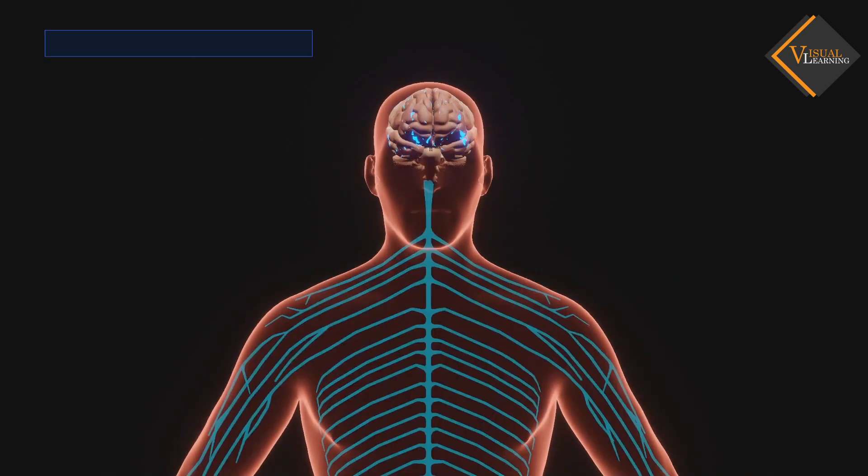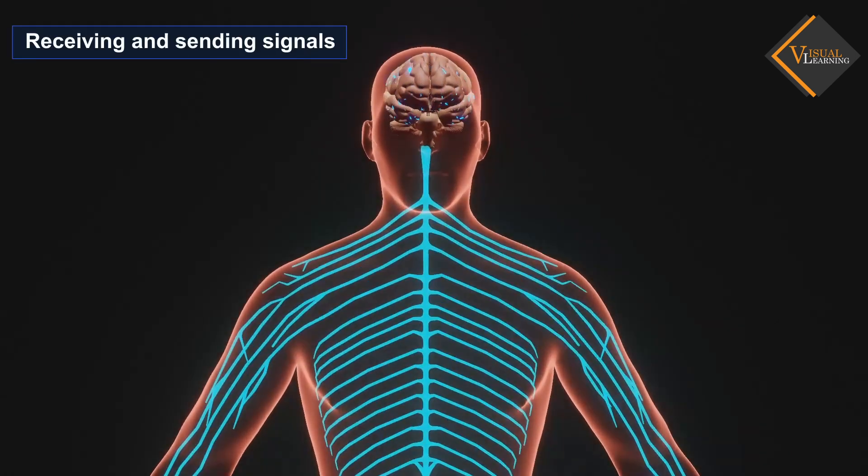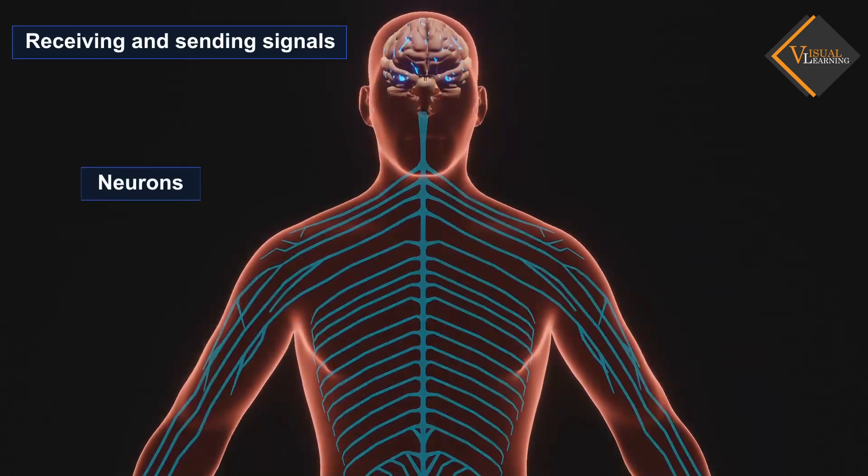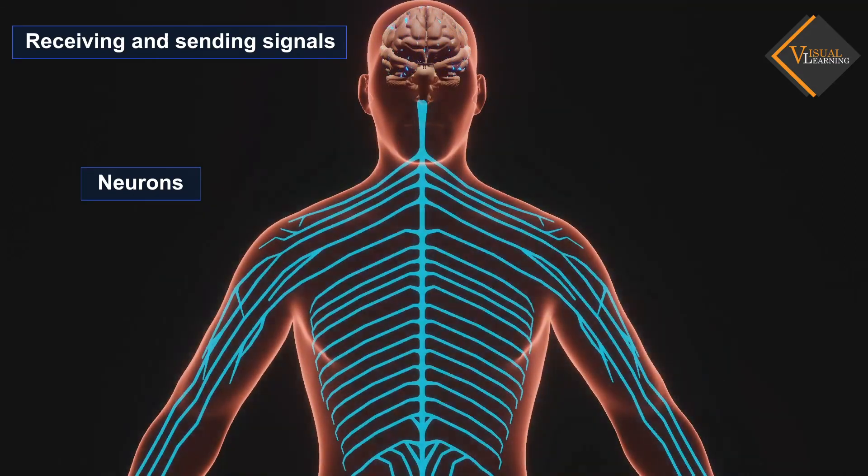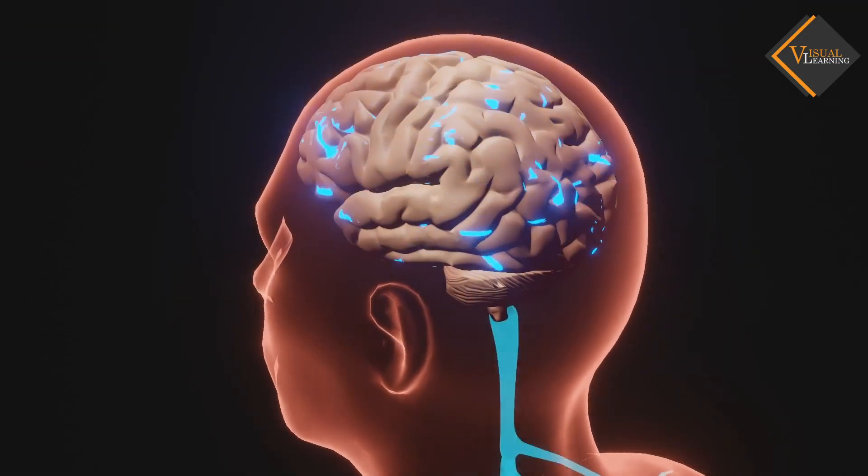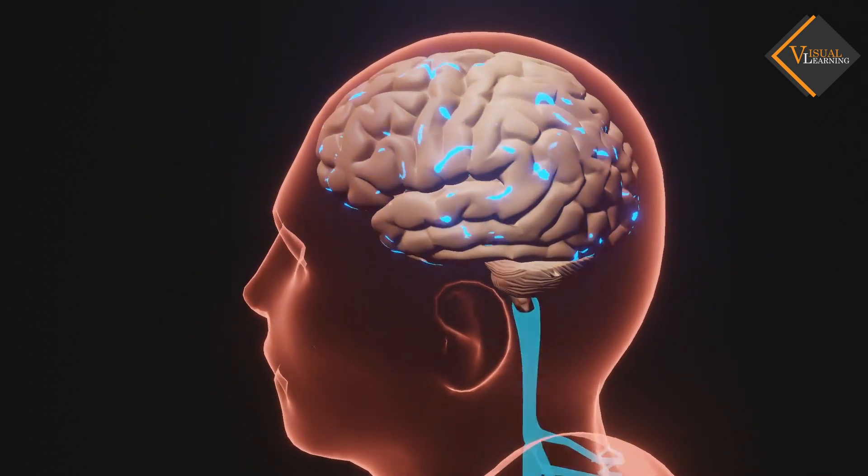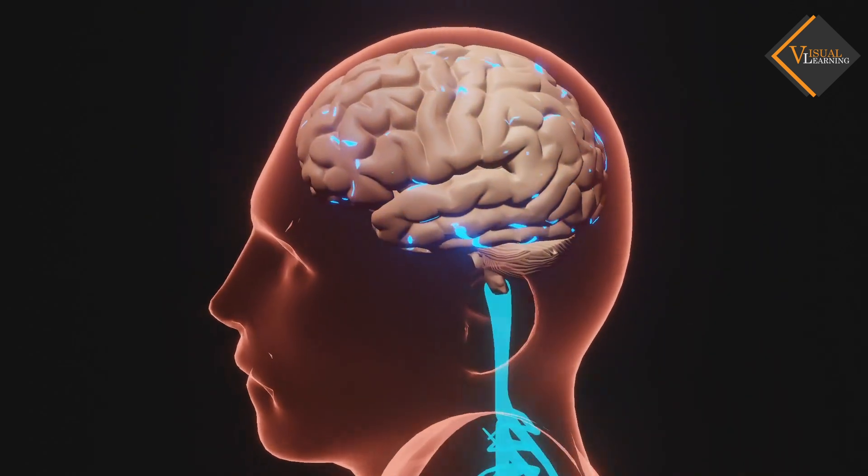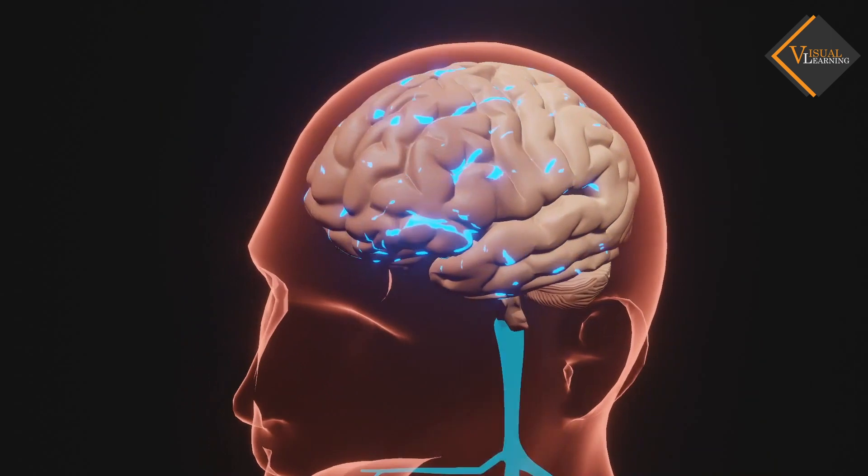It functions by receiving and sending signals via neurons to different parts of the body. The human brain, just like most other mammals, has the same basic structure, but it is better developed than any other mammalian brain.